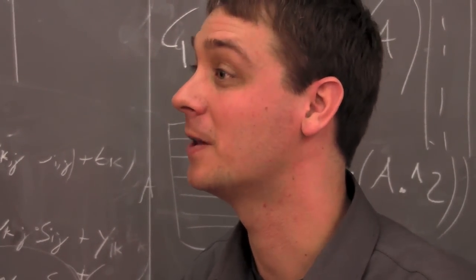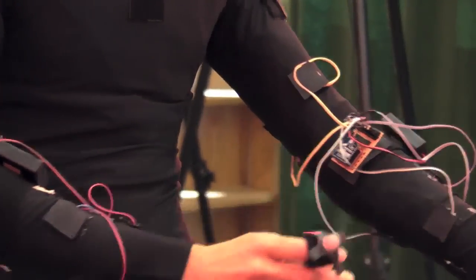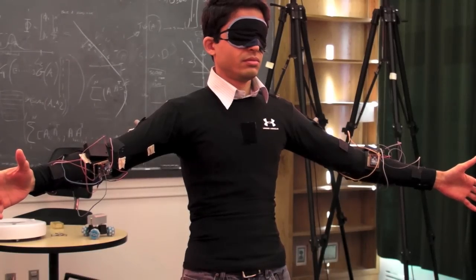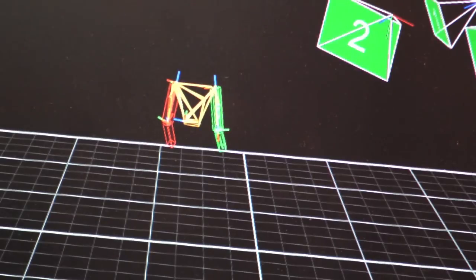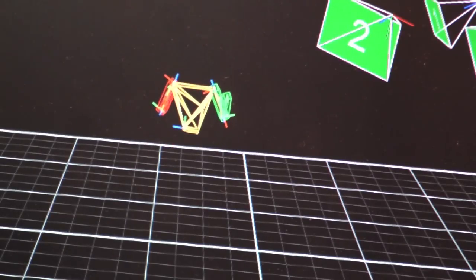So our idea was to do something a little simpler, which is to put little buzzing cell phone motors all over the people and use some external sensors to determine where they are and then buzz those motors to guide them to where they should be.